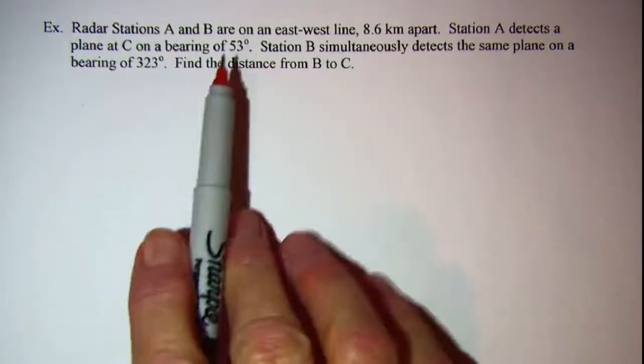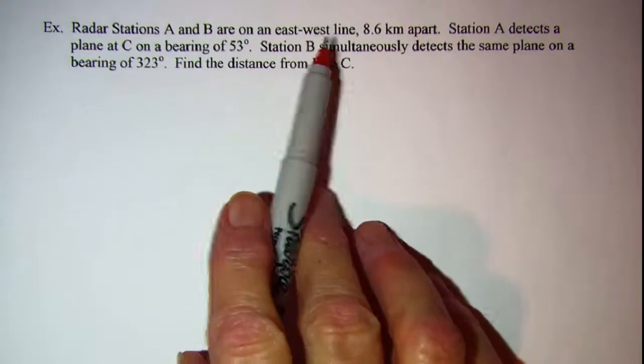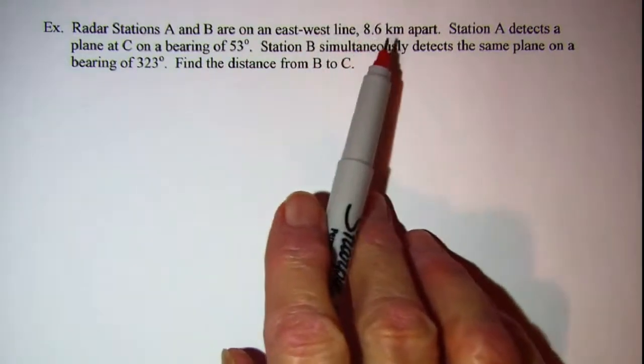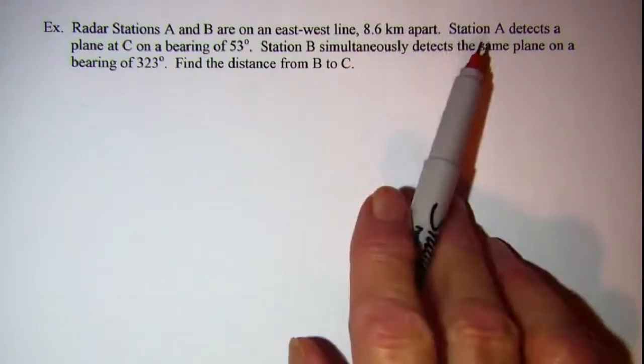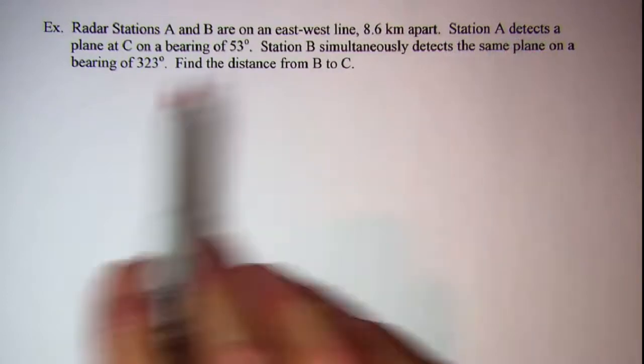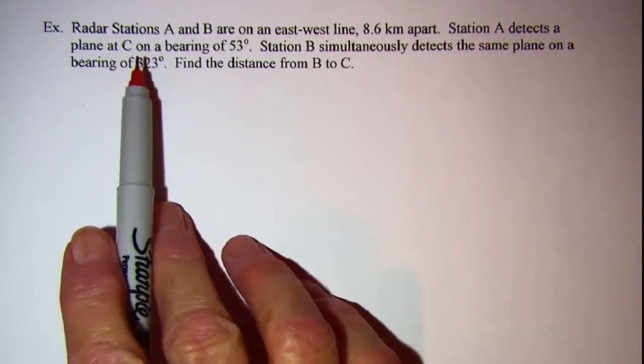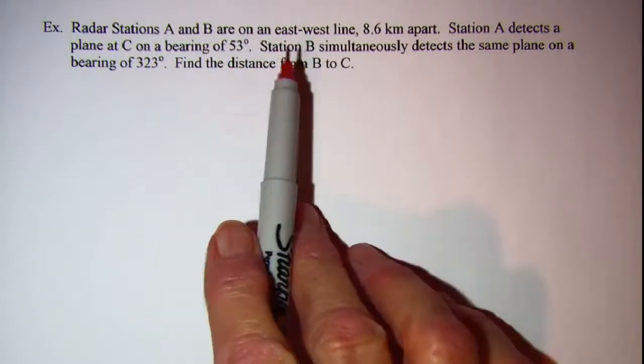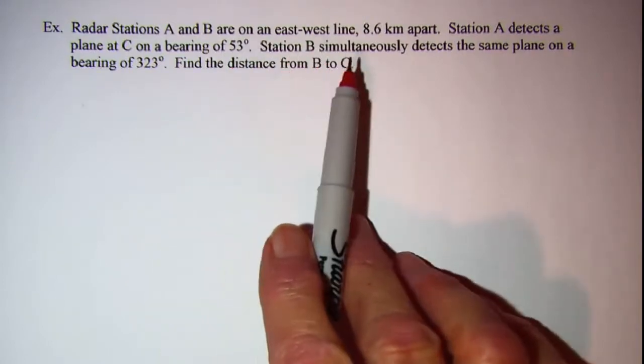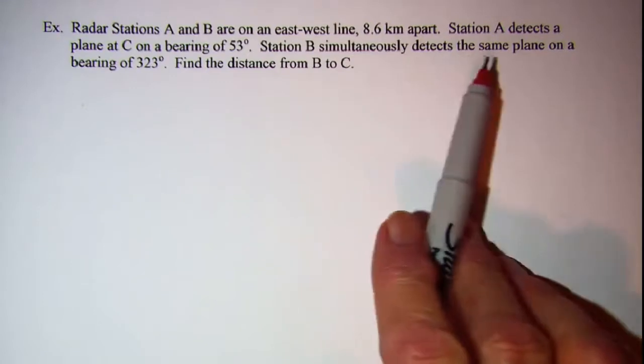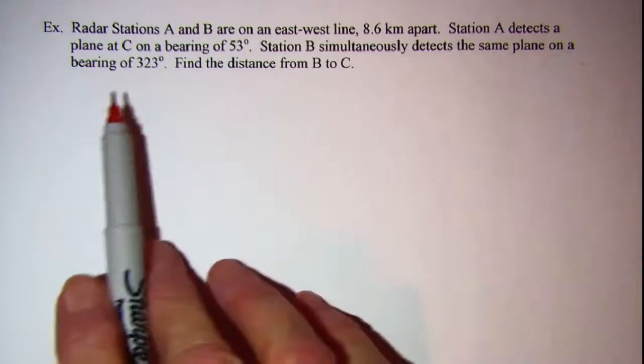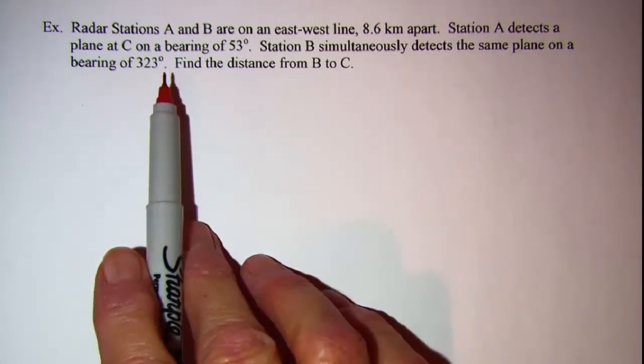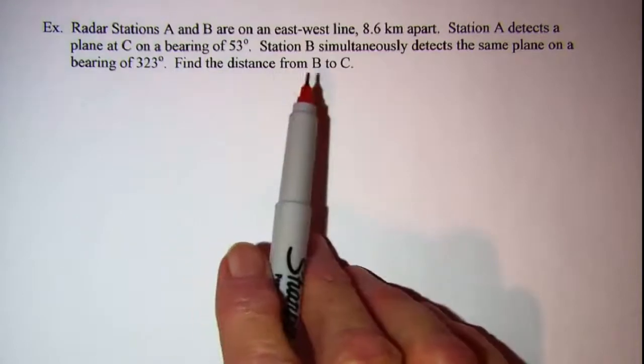Radar stations A and B are on an east-west line 8.6 kilometers apart. Station A detects a plane at C on a bearing of 53 degrees. Station B simultaneously detects the same plane on a bearing of 323 degrees. Find the distance from B to C.